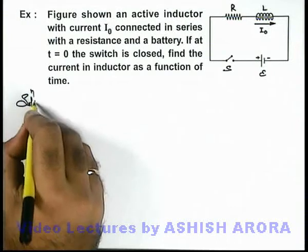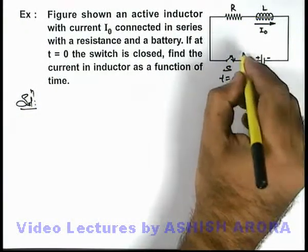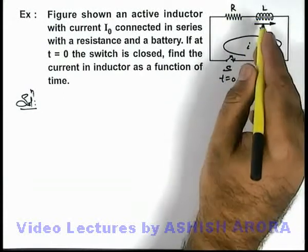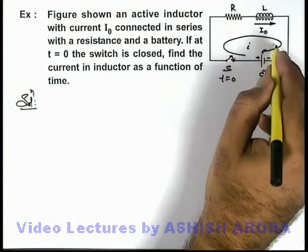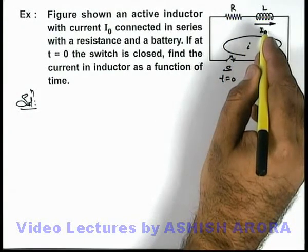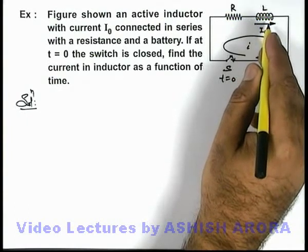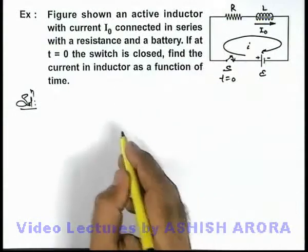Here in solution we can write: if the switch is closed at t equal to zero, the battery will supply a current i. We know that when an active inductor is connected in a circuit, the first current that flows through it is i-not, because it already had initial flux associated with it. So here current will start rising with the value i-not.